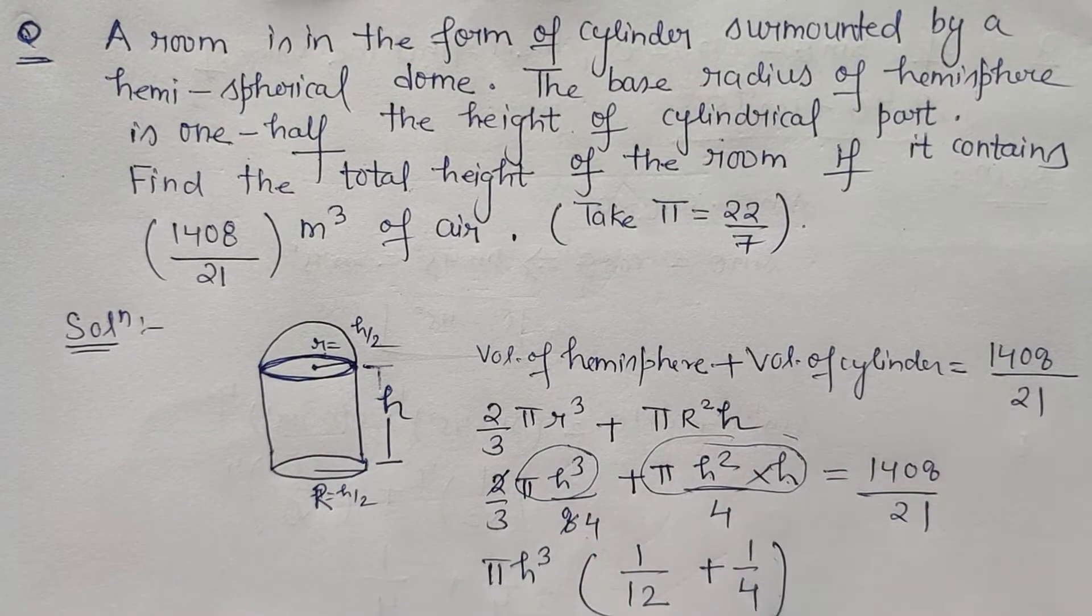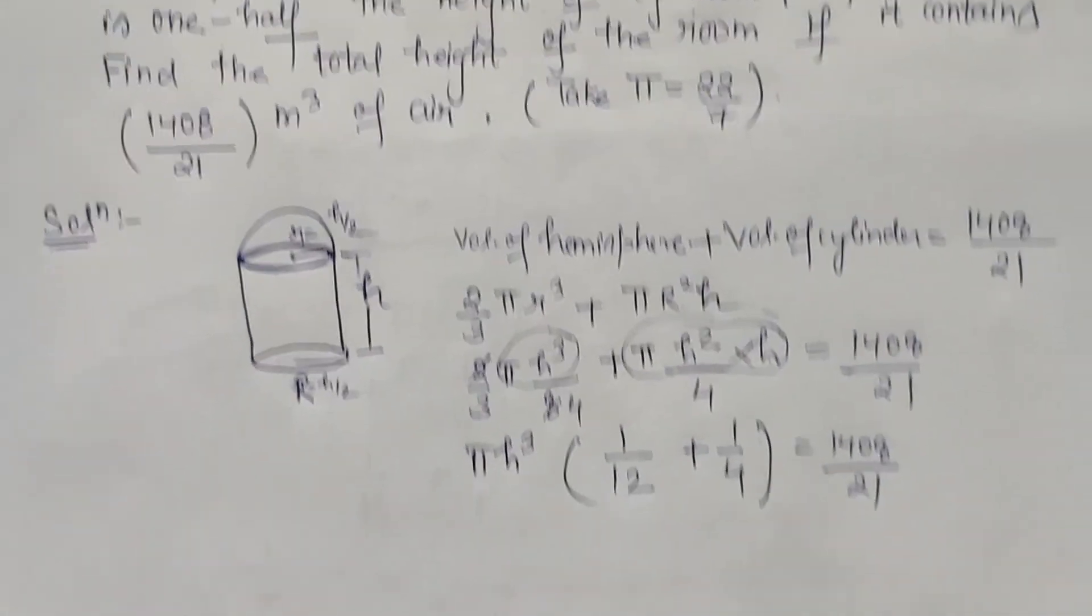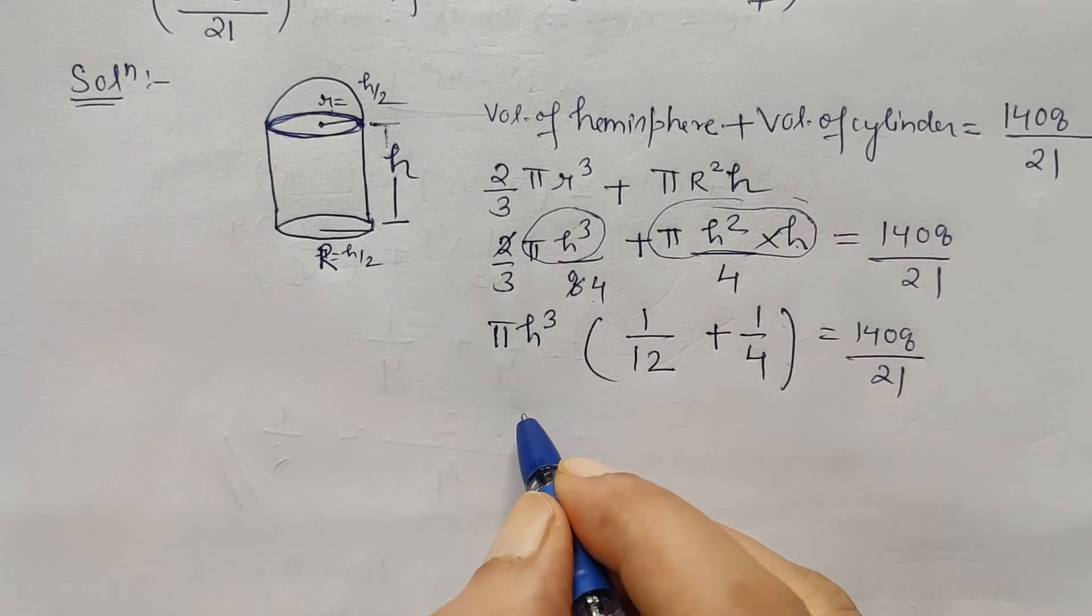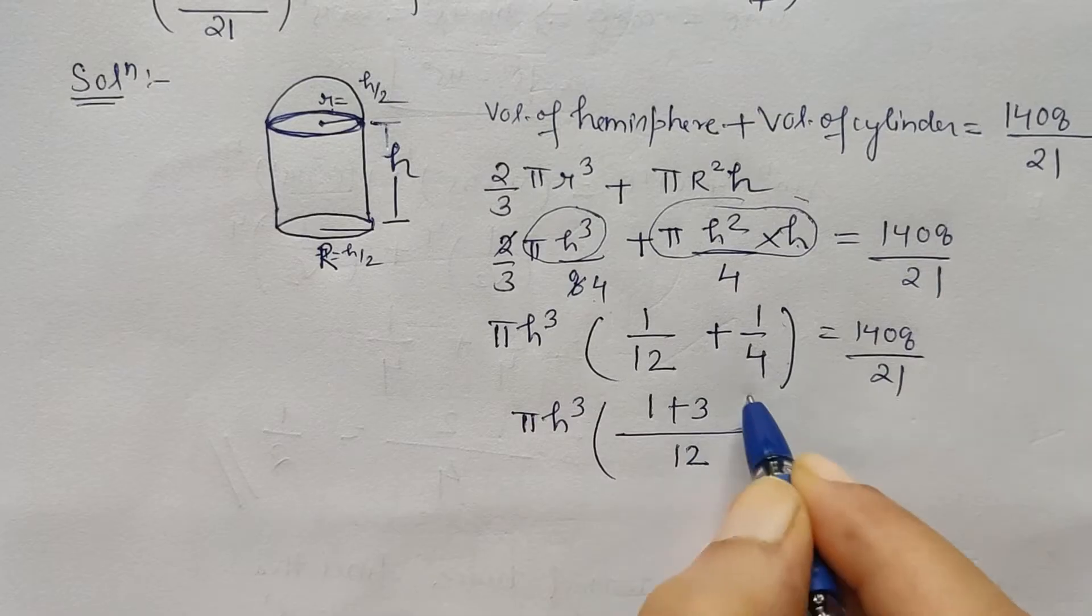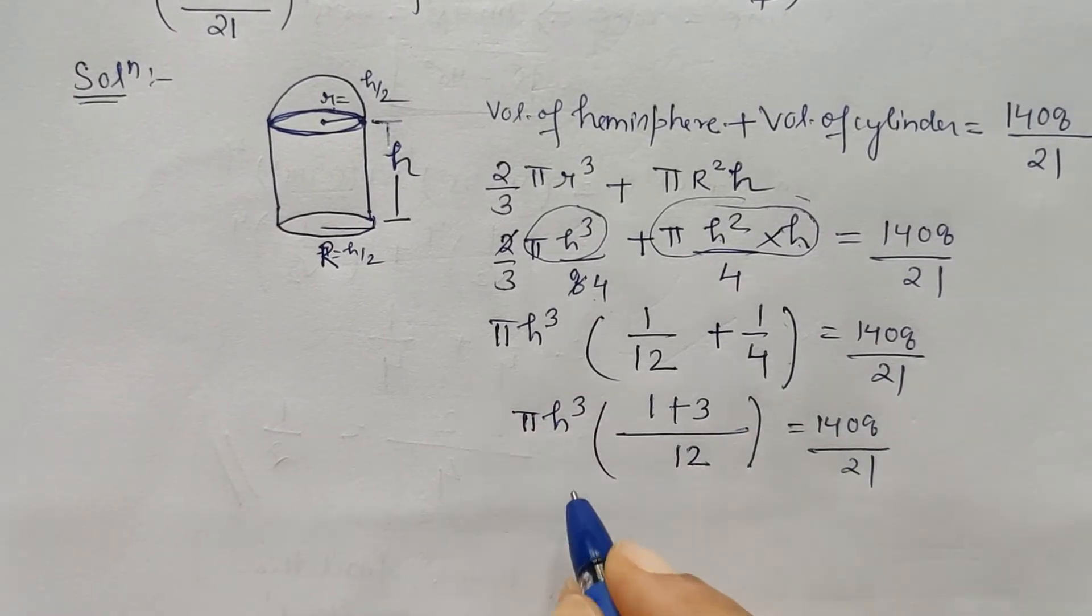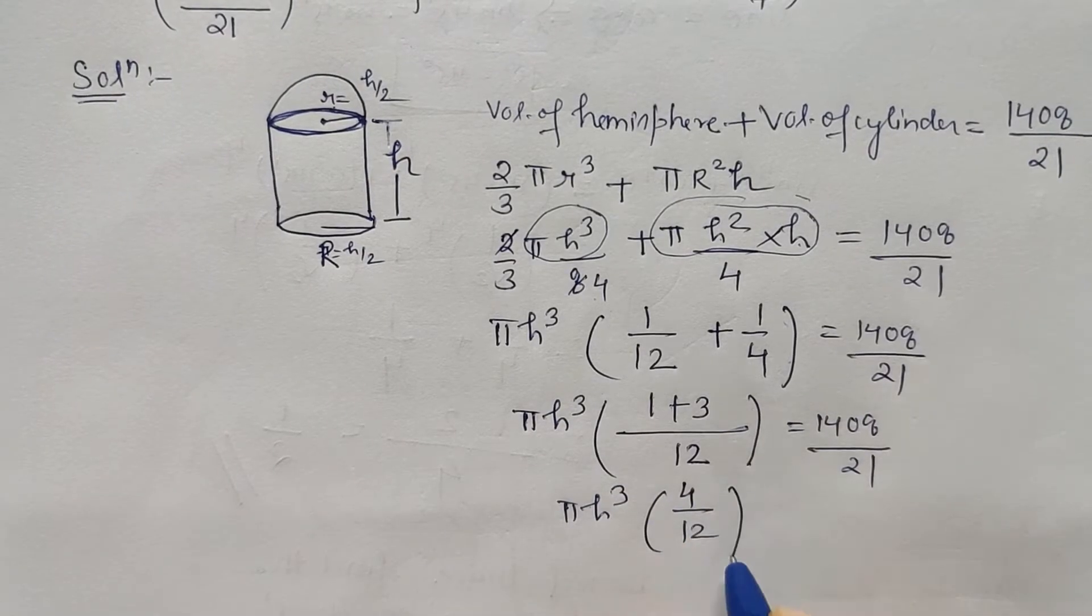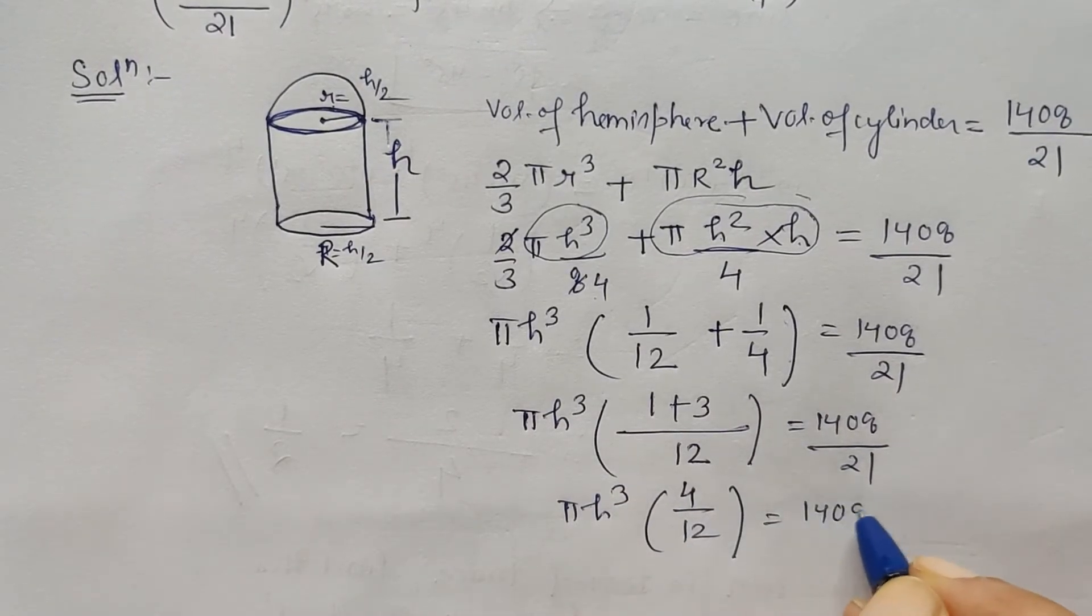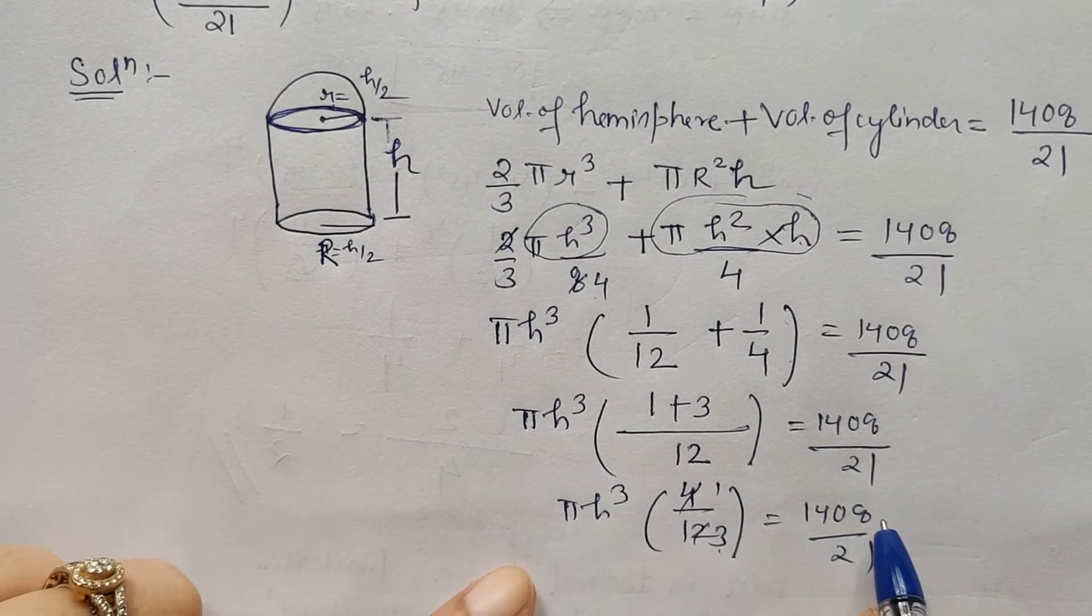3, 4, 12, plus 1 upon 4 is equal to 1408 upon 21. Now let's simplify it, LCM is 12, 1 plus 3, this is 1408 upon 21, and pi h cube, 4 upon 12, this is 1408 upon 21.